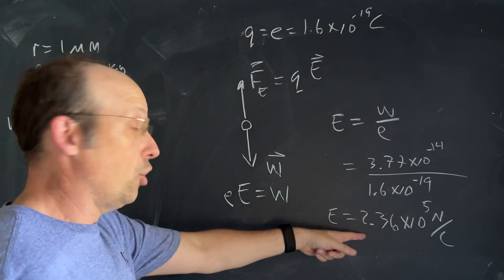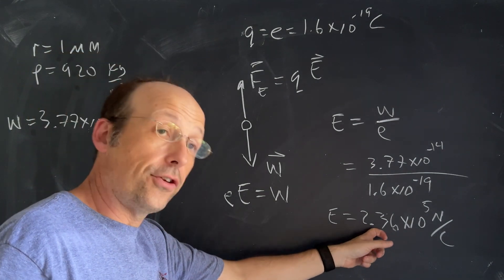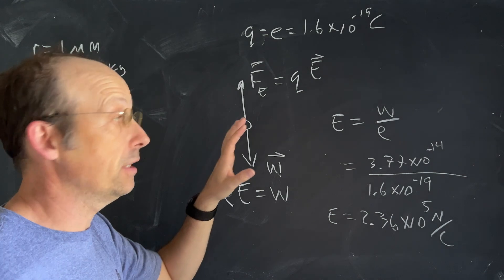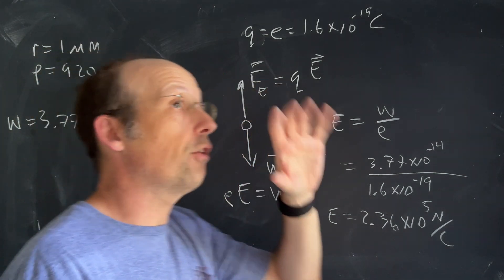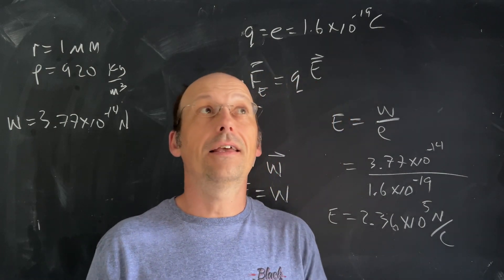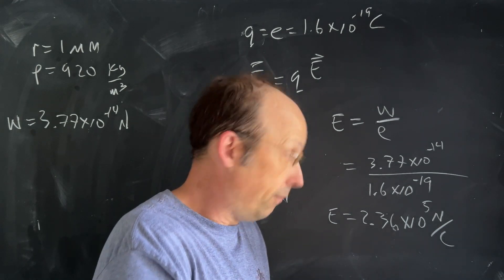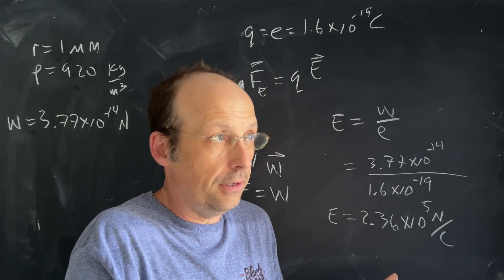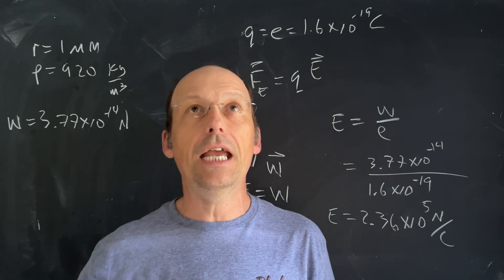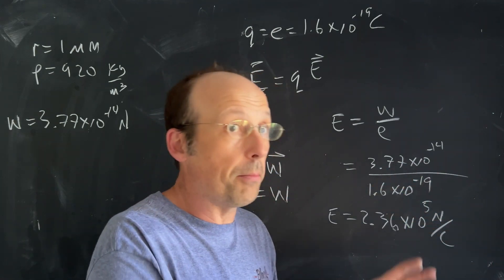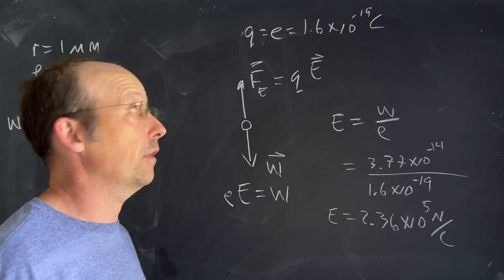Like I said, what Millikan did was to determine the electric field based on the charges and from that find the value of the charge on the drop. The cool part was that he found charges that had a value of one electron, then two, then three, but never one and a half, never 0.389. It was always an integer number of the same charge. And that's how he found the fundamental charge, the charge of an electron.